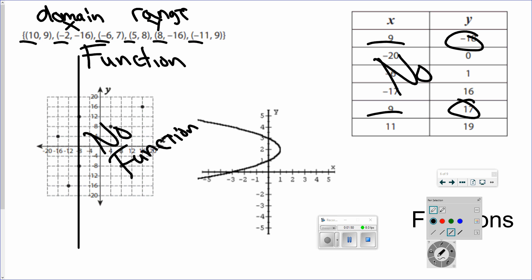Same thing on this last graph. I'm going to do that same vertical line, drag it across, and you can see pretty quickly that it's hitting more than one place. Not a function again. So remember, every input can only have one output.